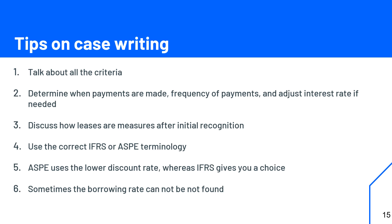The fourth tip is to make sure you are using the right terms depending on the standard. In IFRS it's called a financing lease; in ASPE it's called a capital lease. Also, don't refer to the 75% and 90% thresholds when using IFRS — you don't want the marker to think you're mixing up the two standards. For the discount rate, in ASPE you use the lower of the rate implicit or the entity's borrowing rate; in IFRS you have the choice of either. Lastly, if the case doesn't explicitly state the entity's incremental borrowing rate in the leases section, look elsewhere in the case where the entity borrows money from a bank or another party, and use that rate.